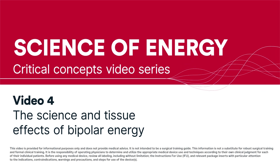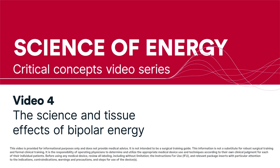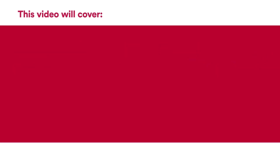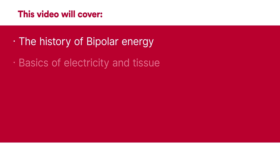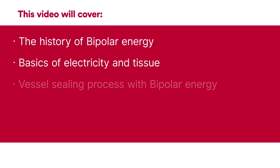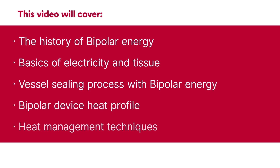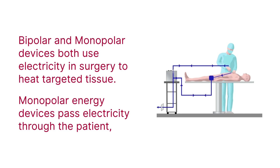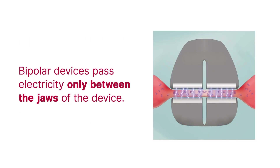Science of Energy Critical Concepts Video Series, Video 4: The Science and Tissue Effects of Bipolar Energy. This video will cover the history of bipolar energy, basics of electricity and tissue, vessel sealing process with bipolar energy, bipolar device heat profile, and heat management techniques. Bipolar and monopolar devices both use electricity in surgery to heat targeted tissue, whereas monopolar energy devices pass electricity through the patient. Bipolar devices pass electricity only between the jaws of the device to heat and coagulate the targeted tissue.